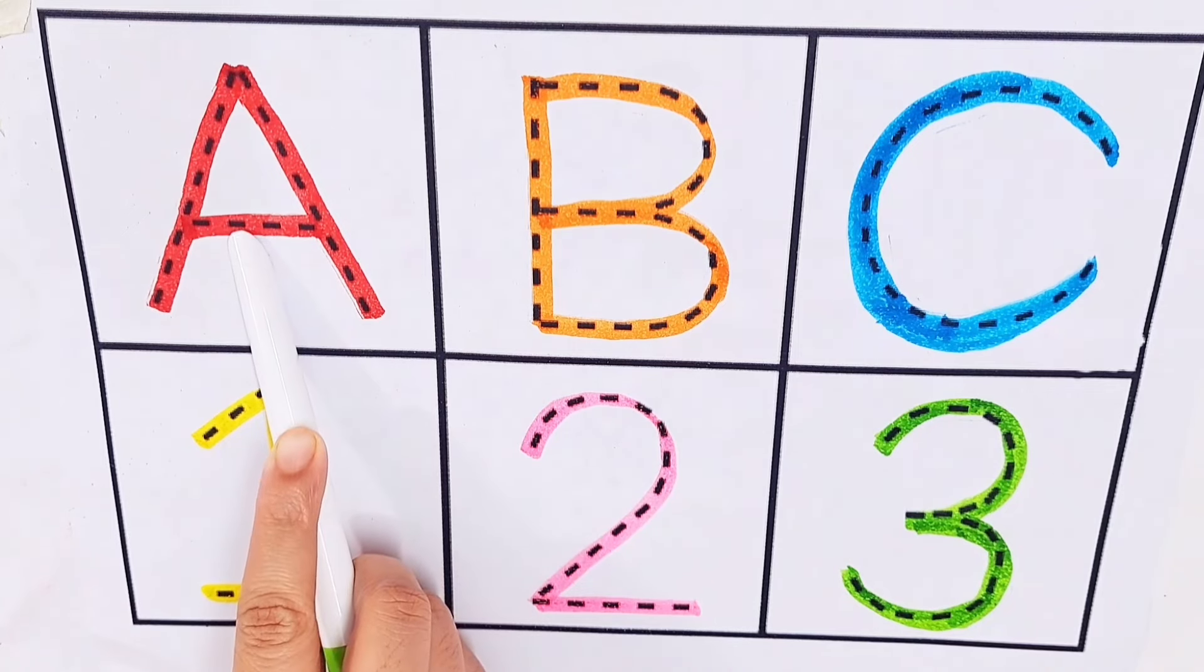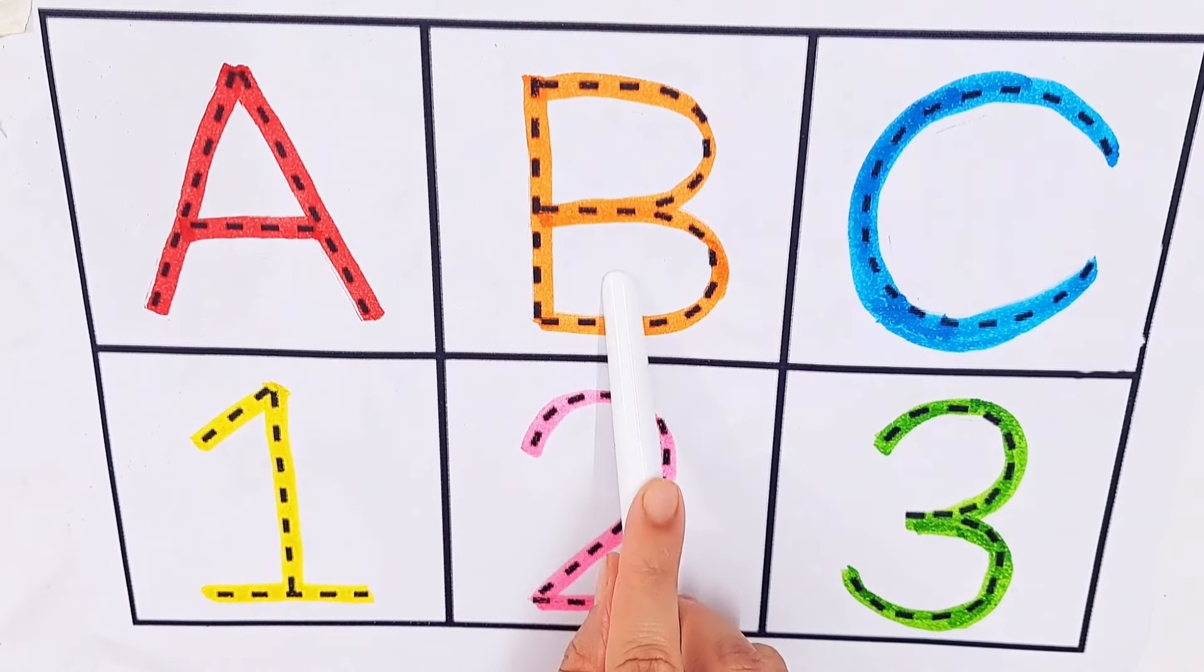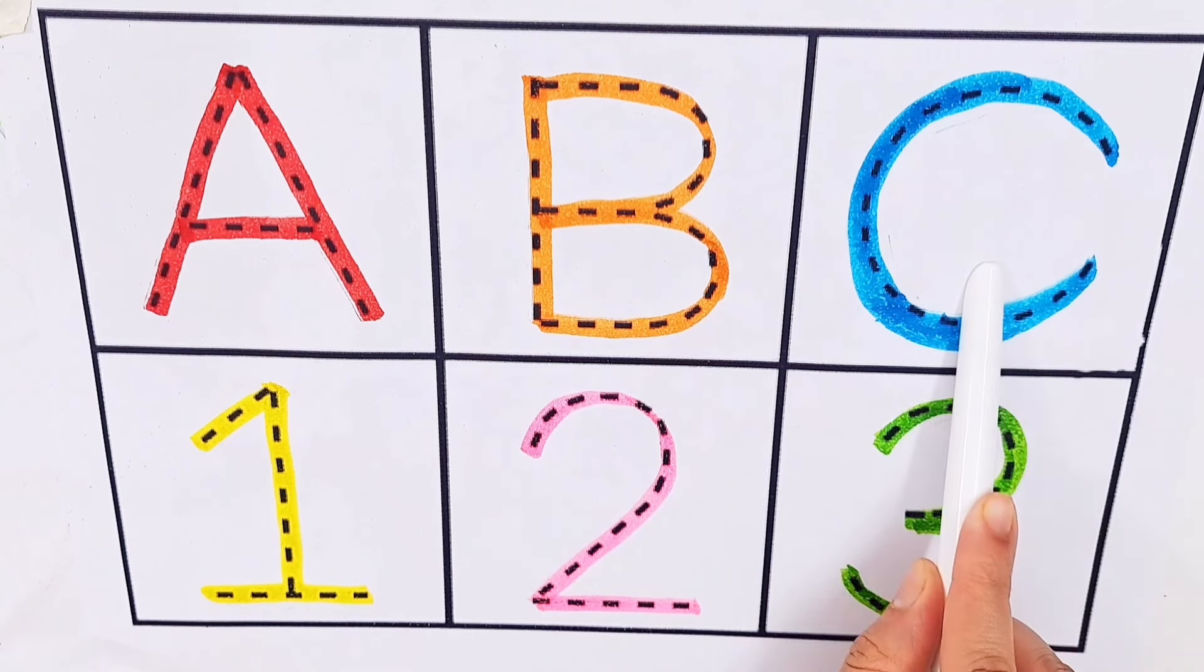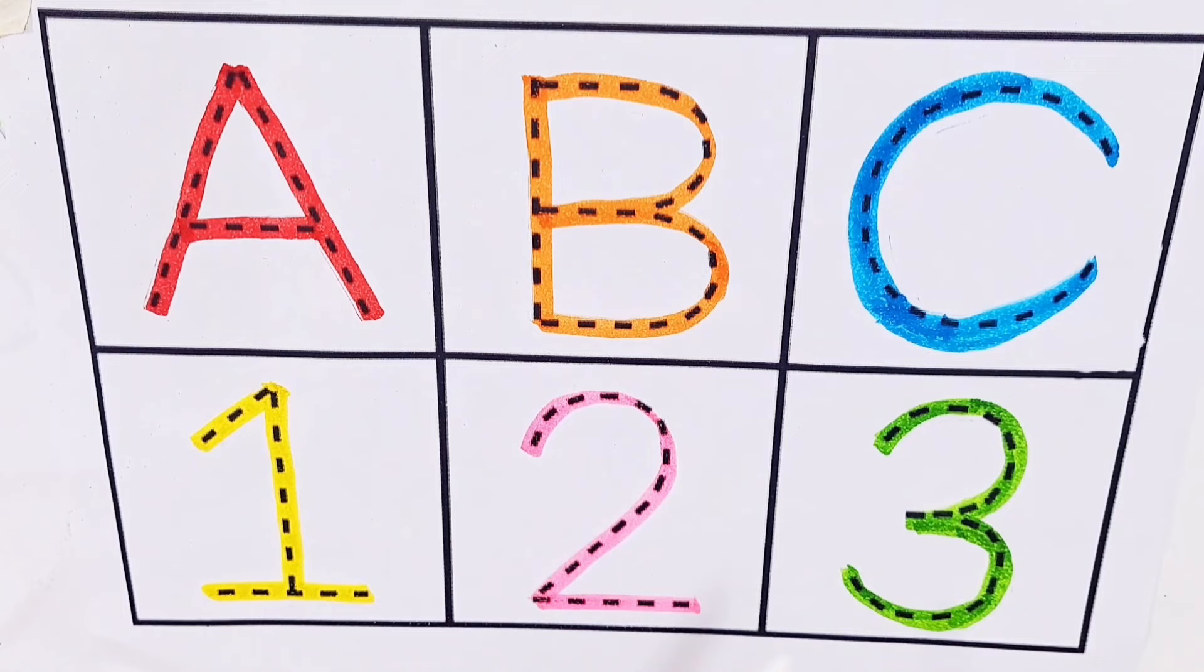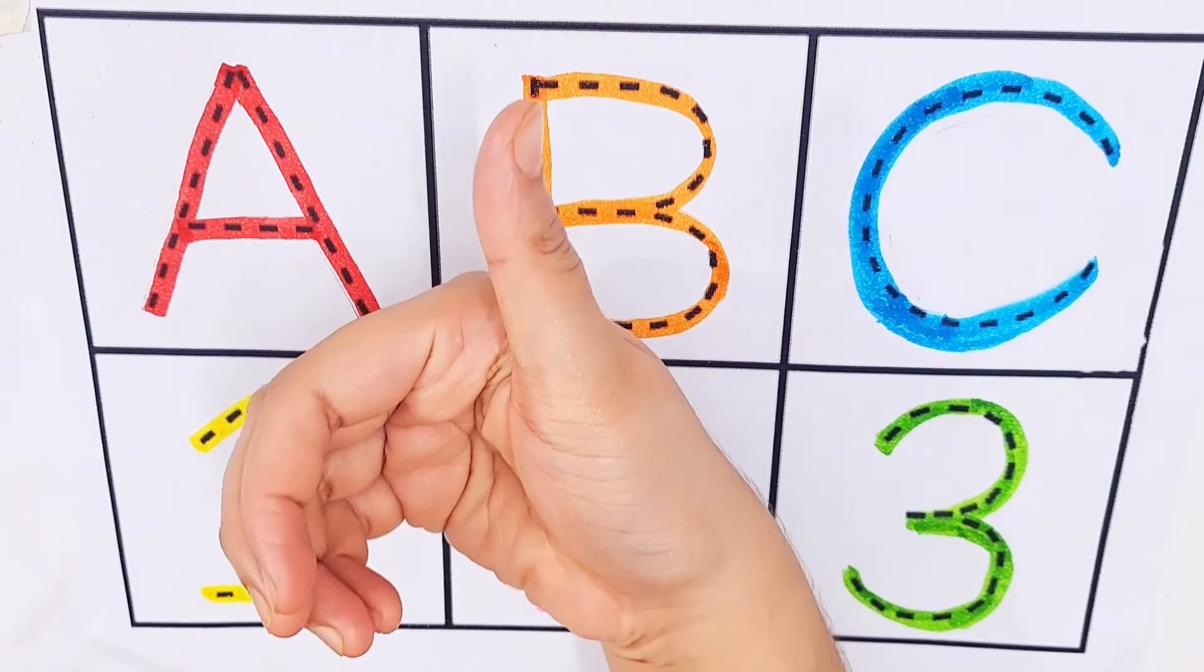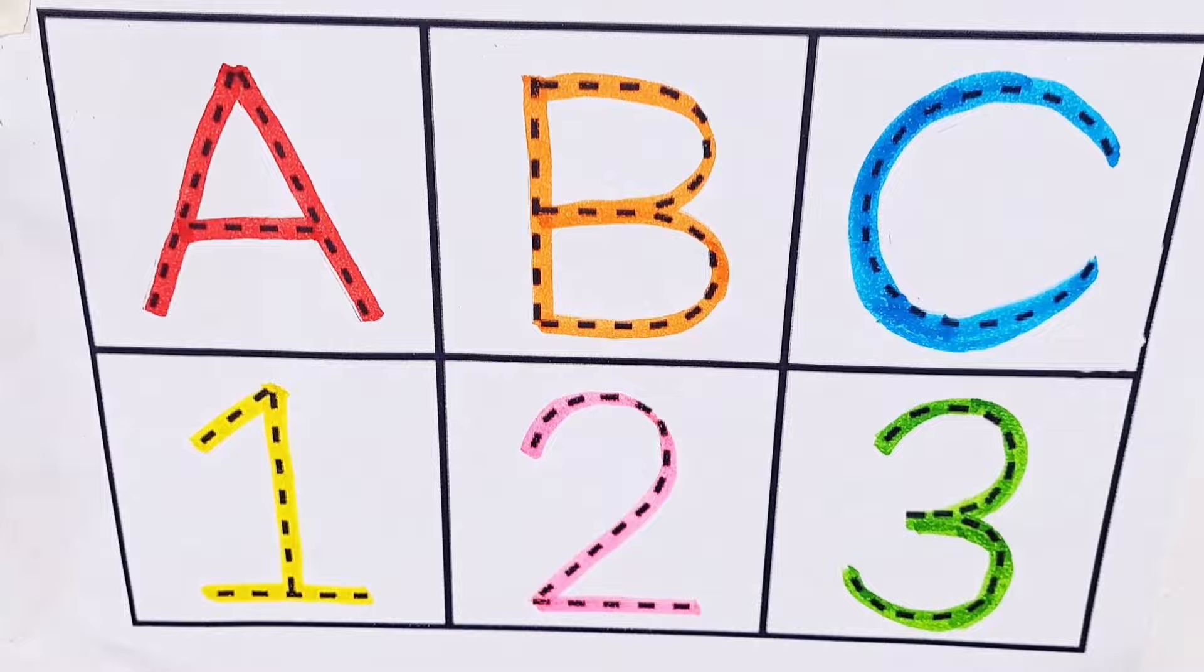A, A for avocado. B, B for bus. C, C for car. Number one, number two, number three. Thanks for watching, don't forget to like and subscribe. See you next videos, bye bye.